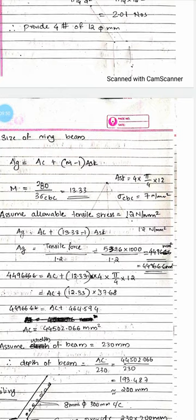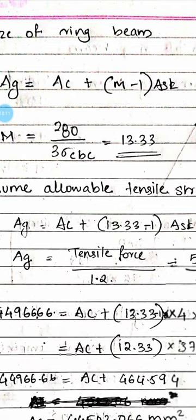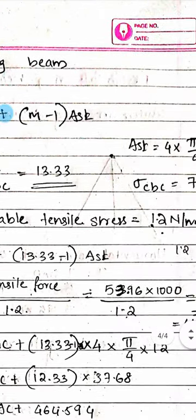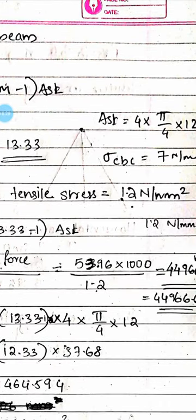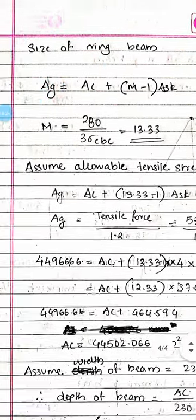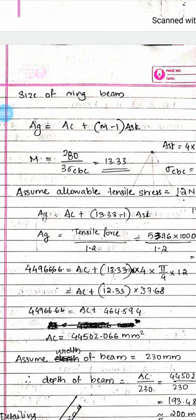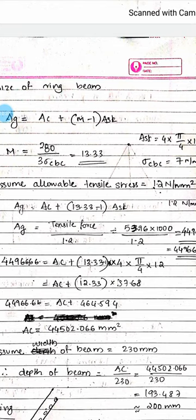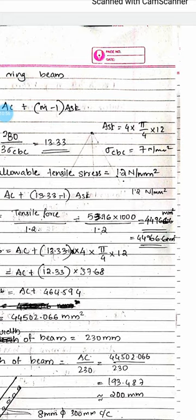The size of the ring beam is calculated using: AG equals AC plus (M-1) into AST, where AC is the area of concrete. M equals 280 divided by 3·σcbc, and σcbc equals 7 N/mm² from IS456 page 82. We assume the allowable tensile stress is 1.2 N/mm². The corresponding AG equals tensile force divided by 1.2, giving 53.96 divided by 1.2 which equals 44966.6 mm².